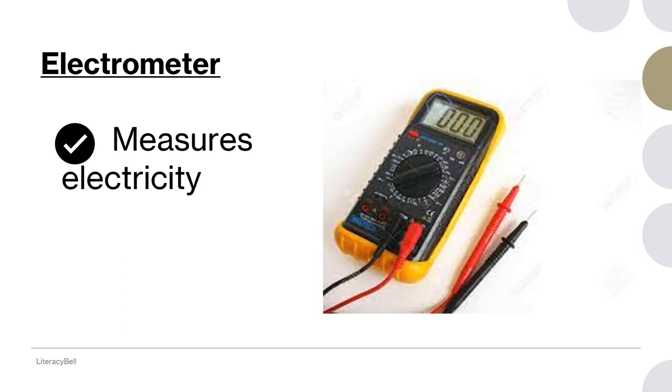Electrometer. Here also we divide the word into two: electro plus meter. Electro means electricity. We get electricity bill every time in our home. How much electricity is consumed by us? How is it measured? It is measured by electrometer. Electrometer is used to measure the electricity.